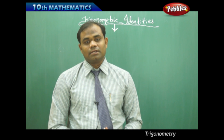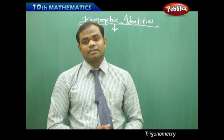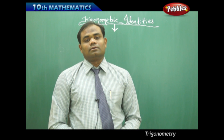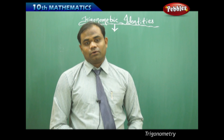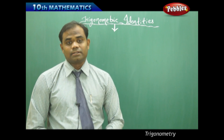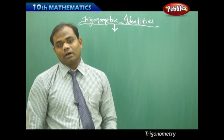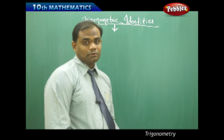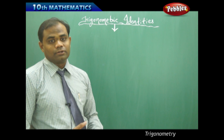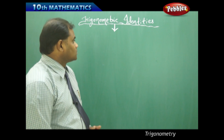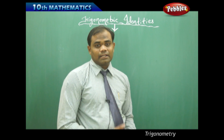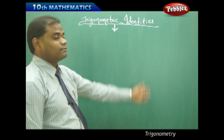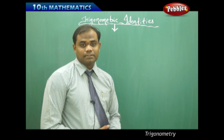There are some basic trigonometric identities for which you take any angle, substitute it in the equation, and get equality. Let's derive the first trigonometric identity from the trigonometric ratios.